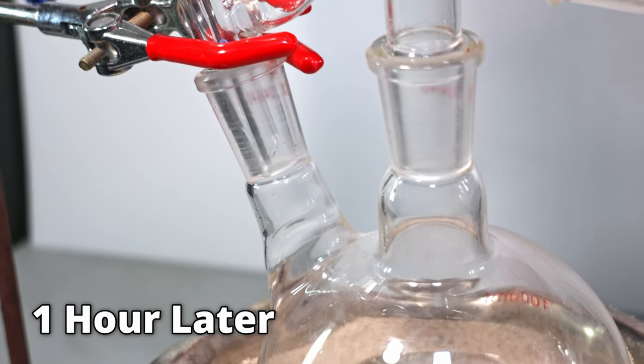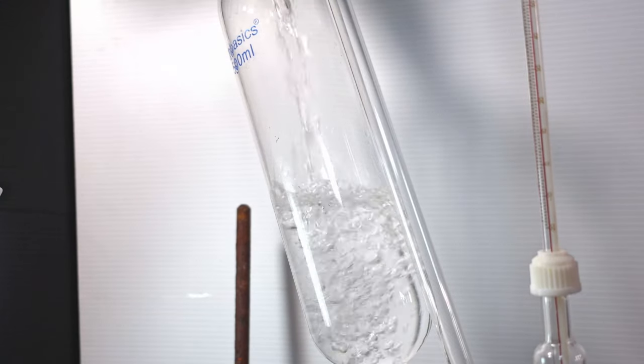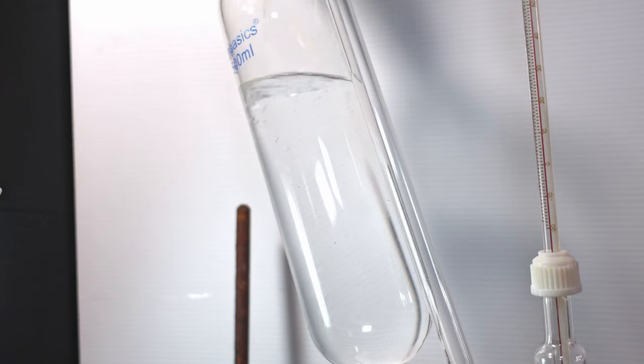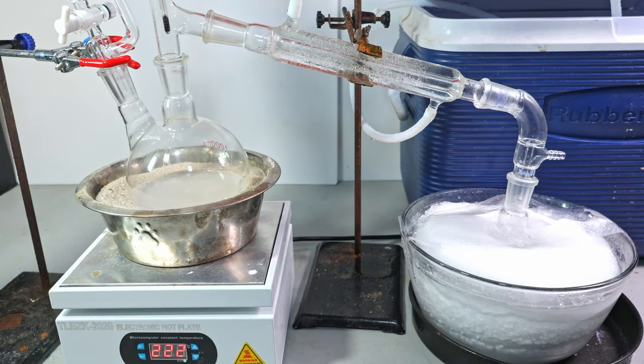Later, the tert-butanol has created a small layer over the thick acid so I'm going to heat it up. I'm also going to add another 300 milliliters of tert-butanol. With the acidic solution now hotter, let's see if we're making any isobutylene.